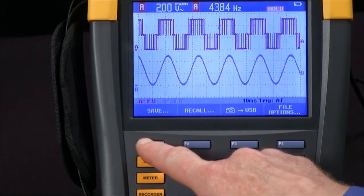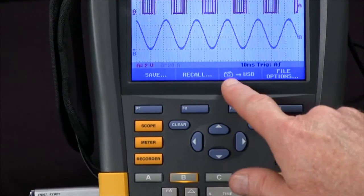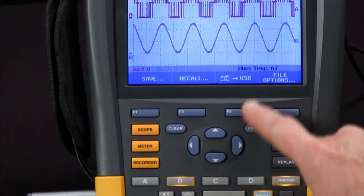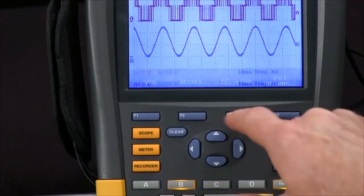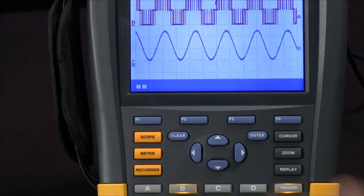Another way to save the information is to save a snapshot of the screen directly to the USB. If I hit the F3 key, we'll save a snapshot.